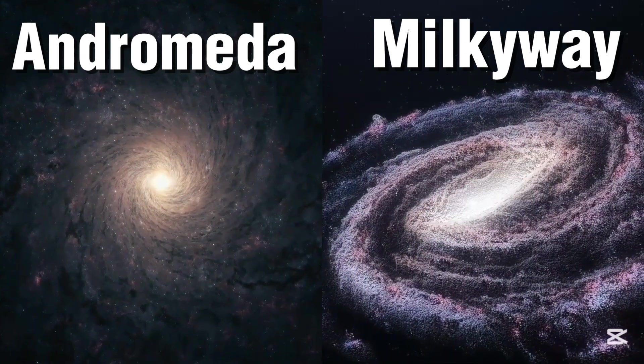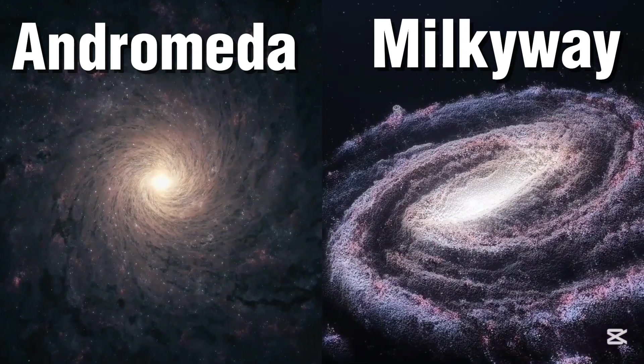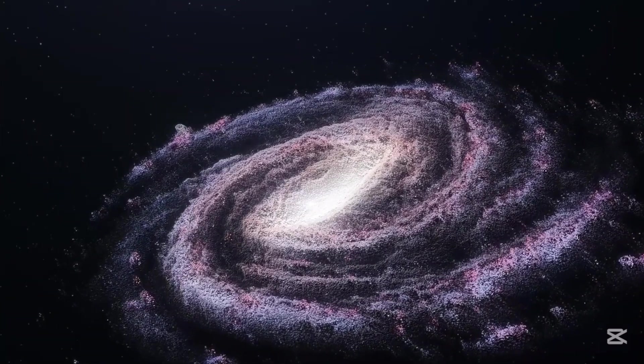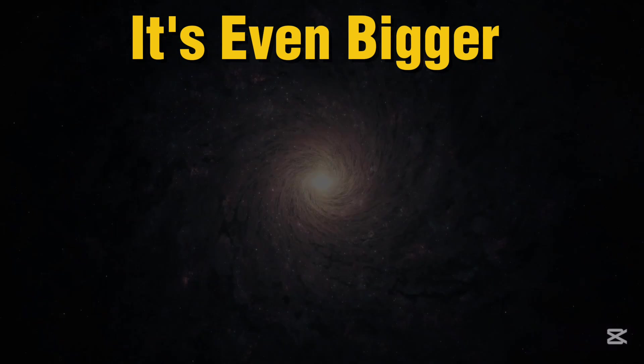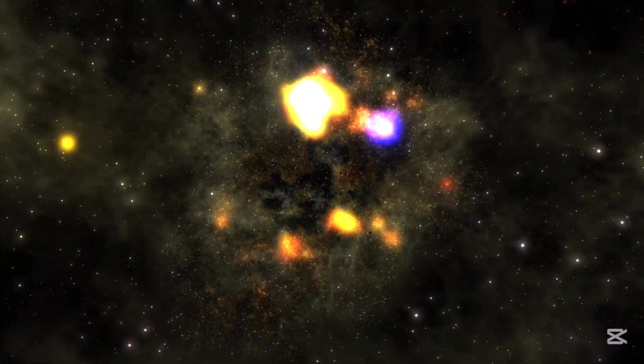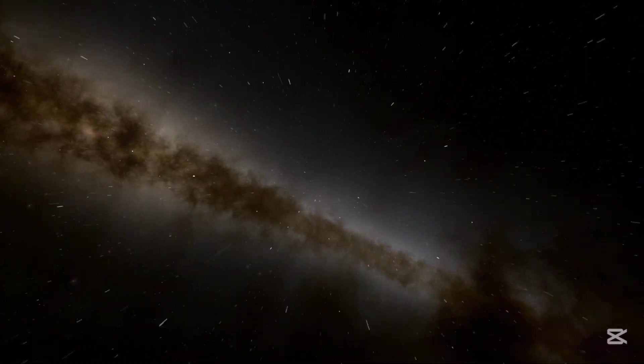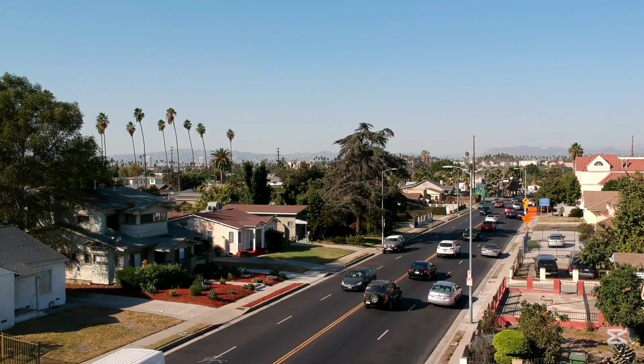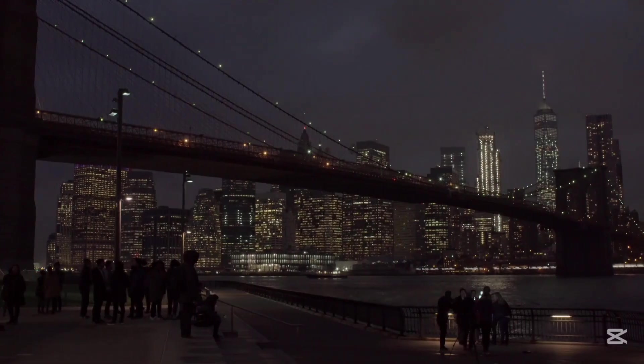The Milky Way and Andromeda are two of the most massive galaxies in our local universe. The Milky Way is no small fry, containing over 200 billion stars, but Andromeda? It's even bigger, boasting a trillion stars. Right now, Andromeda is speeding toward us at 110 kilometers per second. That's fast enough to travel from Los Angeles to New York in under a minute.